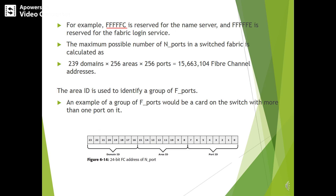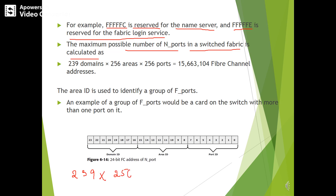For example, FFFFC is reserved for the name server and FFFFE is reserved for the fabric login service. The maximum possible number of N ports in a switched fabric is calculated as 239 domain IDs multiplied by 256 area IDs multiplied by 256 ports, giving a total of 15,663,104 fiber channel addresses.